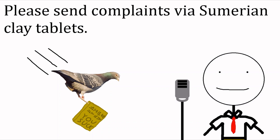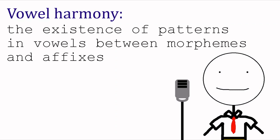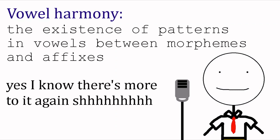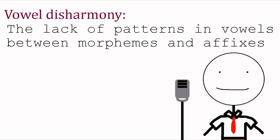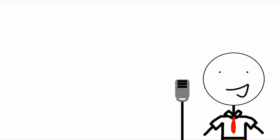Since I'm making this concept up, there are multiple ways I can go about it. Let's first start by defining vowel harmony as the existence of patterns with vowels in morphemes, even if sound changes have made them irregular. As such, vowel disharmony will be the lack of vowel patterns. This means that for every ending or instance where vowel harmony would come into play, all vowels are specified in the lexicon.